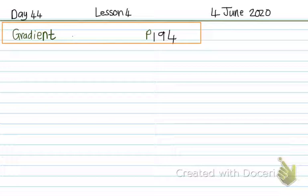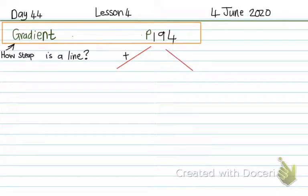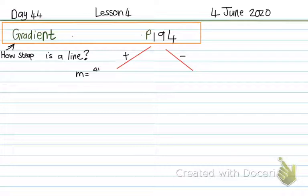You've learnt about the gradient in grade 9. The gradient is about how steep a line is. The steeper the line, the higher the gradient. We also have a positive gradient — which goes uphill — and a negative gradient — which goes downhill. When a line is uphill it is a positive gradient; when a line is downhill, it is a negative gradient.